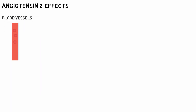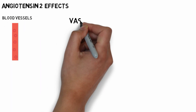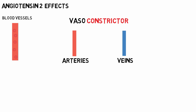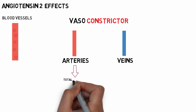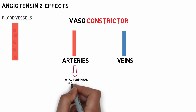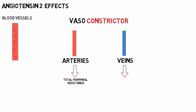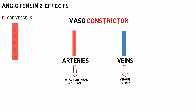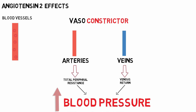Angiotensin 2 is a very potent vasoconstrictor. It constricts both the arteries as well as the veins. The constriction of the arteries leads to a total peripheral resistance increase, and the constriction of veins leads to an increase in the venous return to the heart. Both these mechanisms increase the blood pressure of the person.